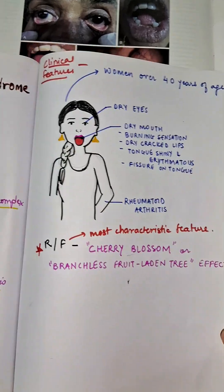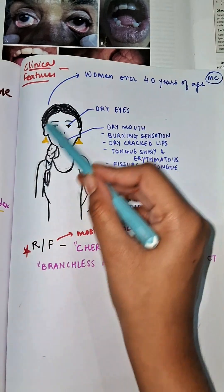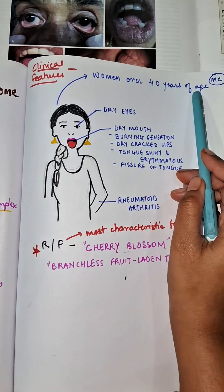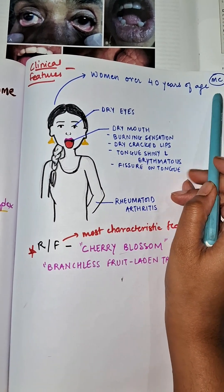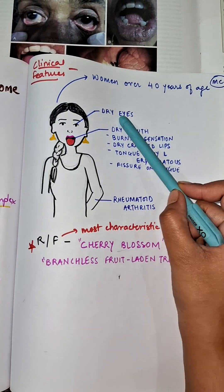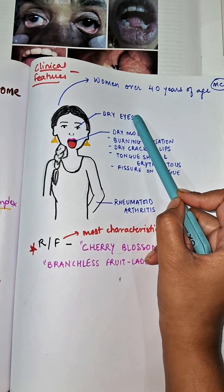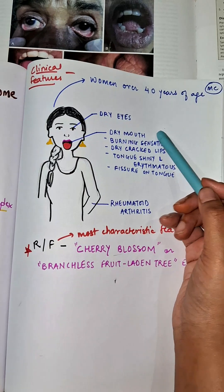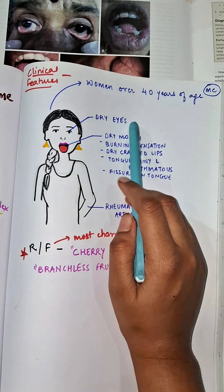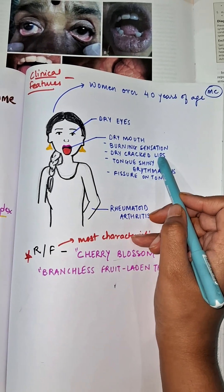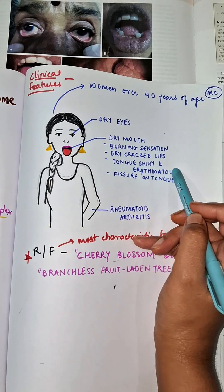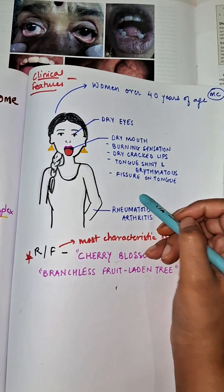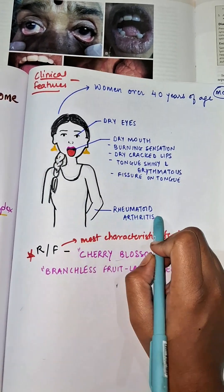Clinical features are most commonly seen in women over the age of 40 years. The presentations include dry eyes due to keratoconjunctivitis, xerostomia causing dry mouth and burning sensation, dry and cracked lips, a shiny and erythematous tongue with possible fissuring, and also rheumatoid arthritis.